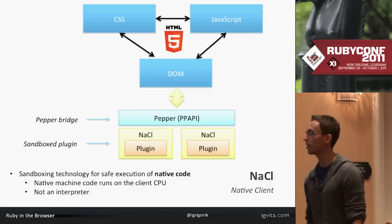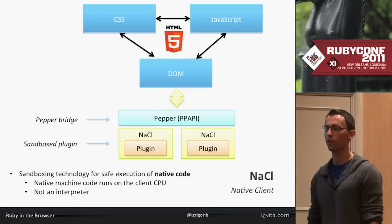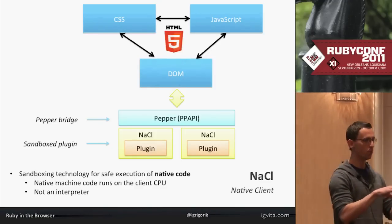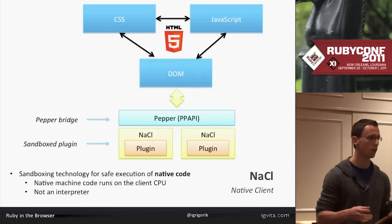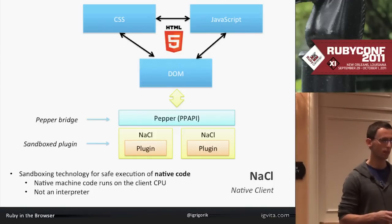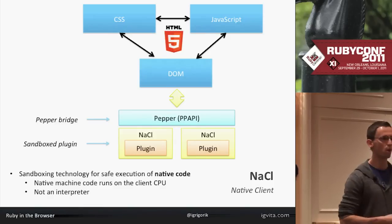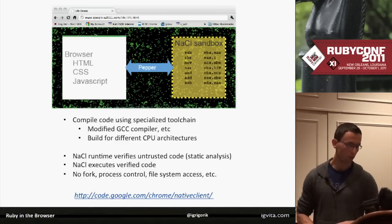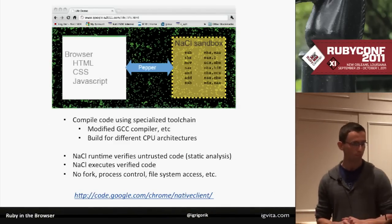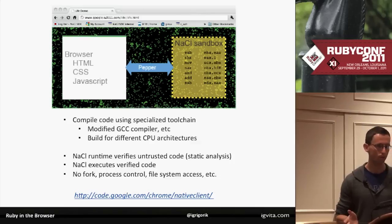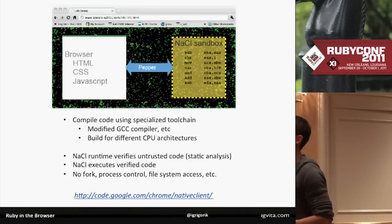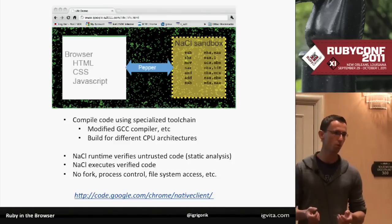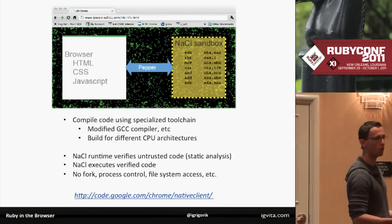Let's unpack that a little bit. It is actually native machine code that runs on your CPU — it is not an interpreter. You actually compile the code and NACL provides some safety guarantees. A little bit closer to what's happening under the hood: you have your C or C++ code, and you compile it with a specialized tool chain that the NACL team provides — there's a modified GCC compiler, etc. Because you're using this tool chain, you do have to compile to different architectures: 32-bit, 64-bit, ARM, and all the rest. It generates a manifest file which then gets loaded by the browser.